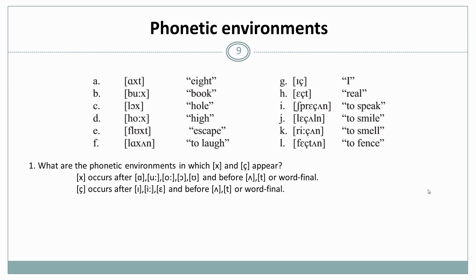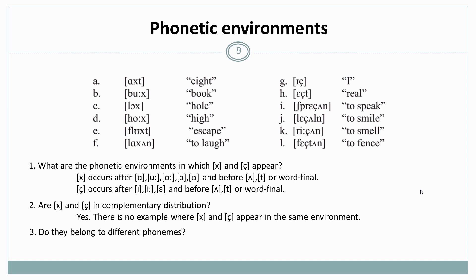And so are x and ç in complementary distribution? Yes, indeed they are. Because there's no example where x and ç appear in the same phonetic environment. ç always appears after i, ɪ, or e as we saw, and x after any other vowel. So there's no case where the distribution overlaps. So do they belong to different phonemes? No, they don't. They are allophones of the same phoneme because they are in complementary distribution. So now we can put x and ç into the same bubble. They are allophones of the same phoneme.